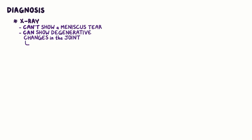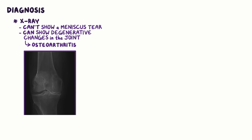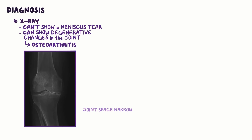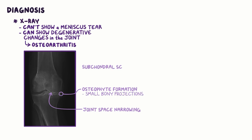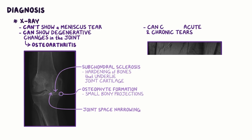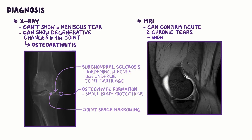An X-ray cannot directly show a meniscus tear, but it can show degenerative changes in the joint, like those in osteoarthritis, which are commonly found in cases of chronic tears. Examples of osteoarthritic changes are joint space narrowing, osteophyte formation — which are small bony projections — and subchondral sclerosis, which means hardening of the bones that underlie the joint cartilage. However, the diagnosis of acute and chronic meniscus tears can be confirmed using an MRI, which will not only show the tear, but also its size and location.